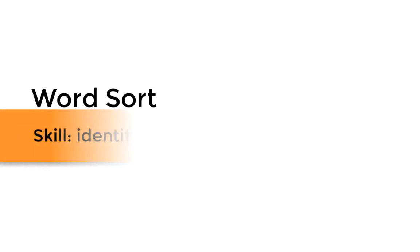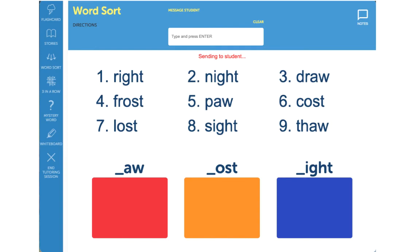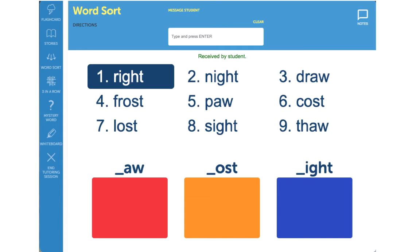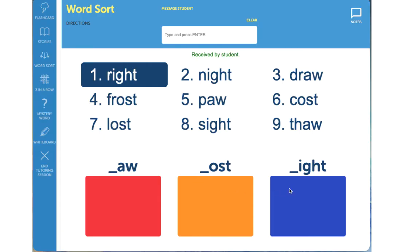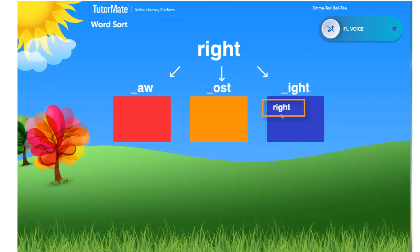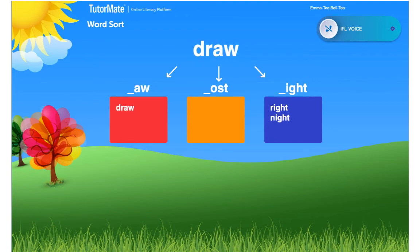In the word sort activity, students will practice sorting words based on their word endings. This is great practice for students learning how to sound out words. As the tutor, you will select the word from the menu, and your student will only see the same word you select. Ask your student where the word belongs based on the word ending. Once you click on the appropriate box, the word will populate and the student will see the same word on their screen. Once all of the words have been placed, draw your student's attention to the similarities of the words, then have your student read the words in each box.